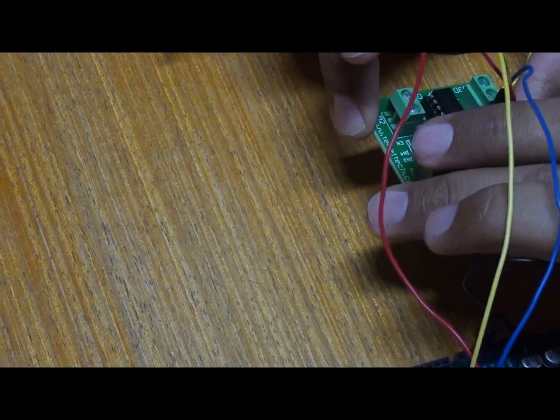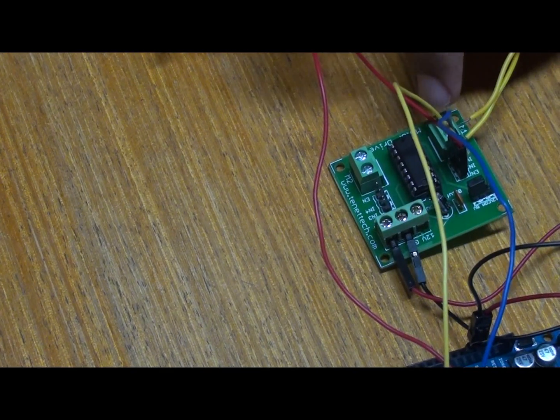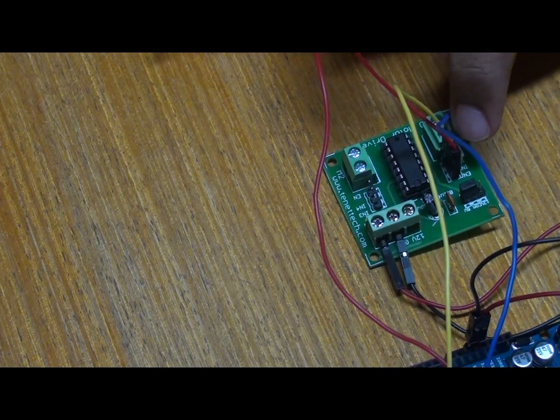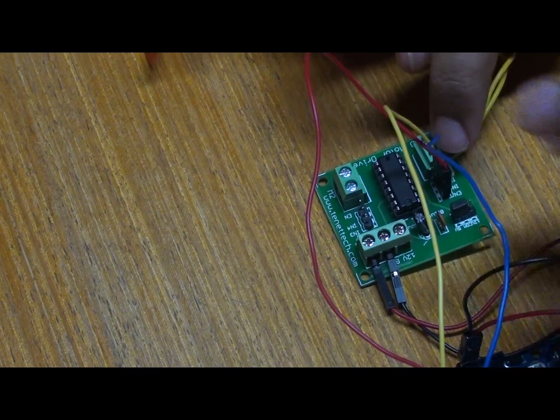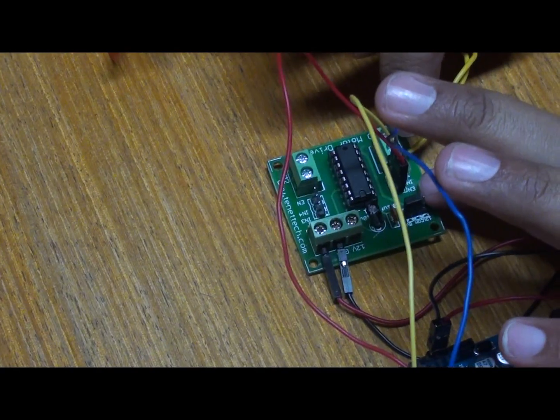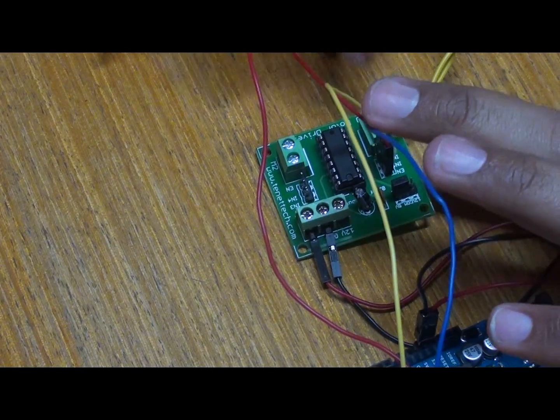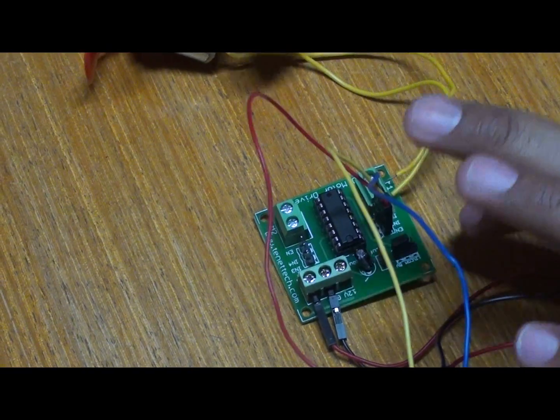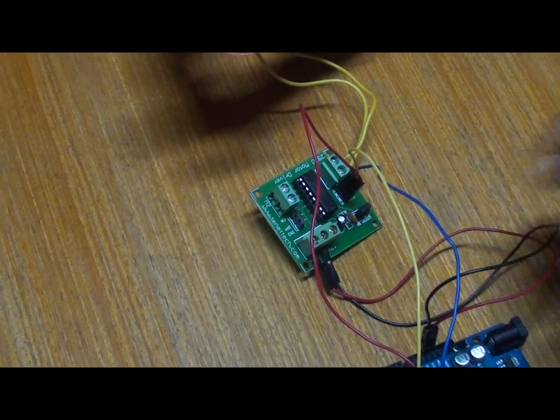Here we can see the input pins—3 input pins which are given to this motor. The corresponding input pins are available here, so we just connect them. The enable pin is active high. From here we take the output and give it to the 5 volt DC motor.